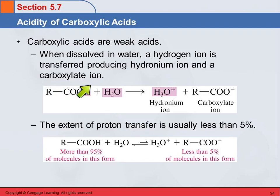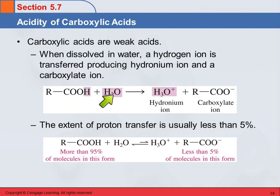So when we dissolve a carboxylic acid in water, this is an acidic hydrogen. That's what makes it an acid. And that hydrogen can jump ship and go hang out on a water molecule, forming the hydronium ion. So we've got the transfer of a hydrogen ion. A hydrogen ion is simply a proton because a hydrogen atom has one proton and one electron. If you remove the one electron to make an H-plus ion, what do you have left? Just the proton.